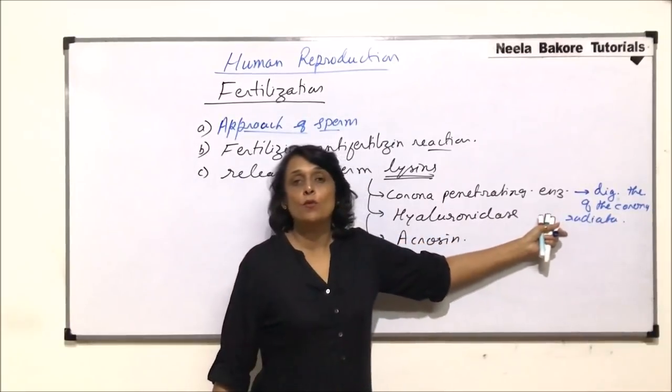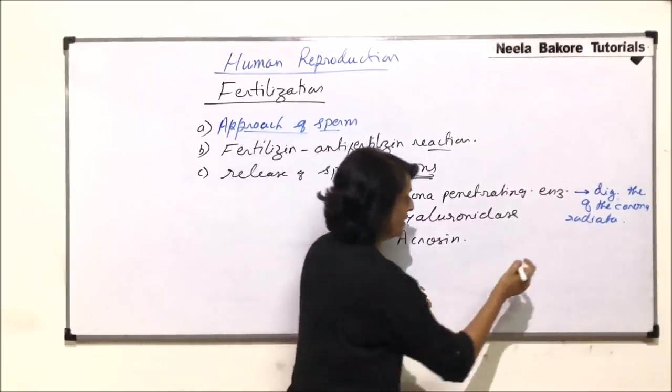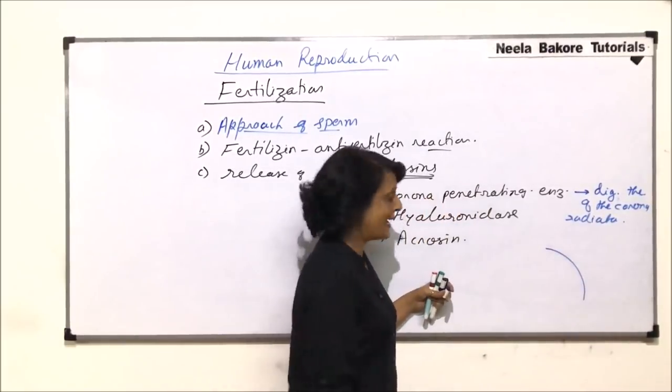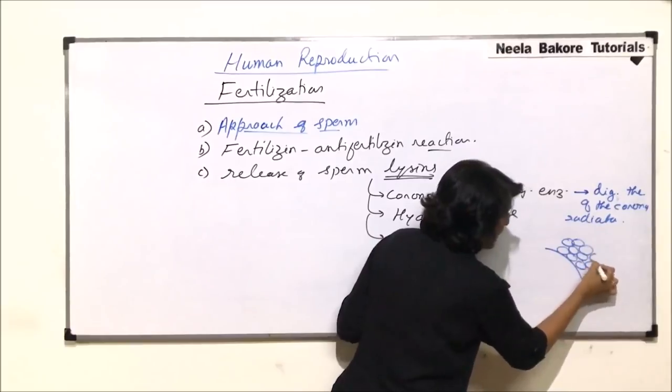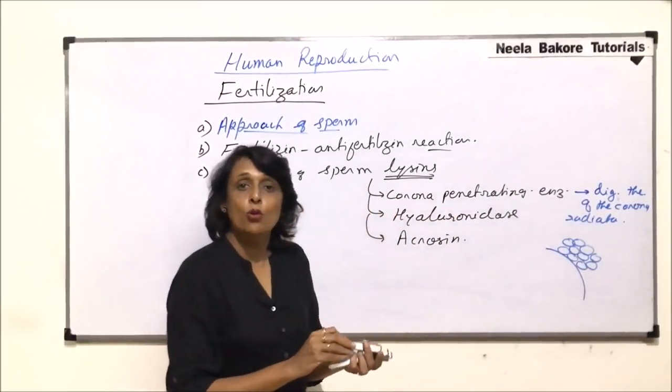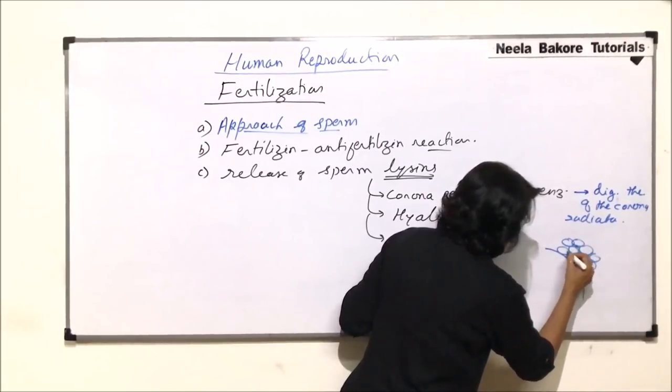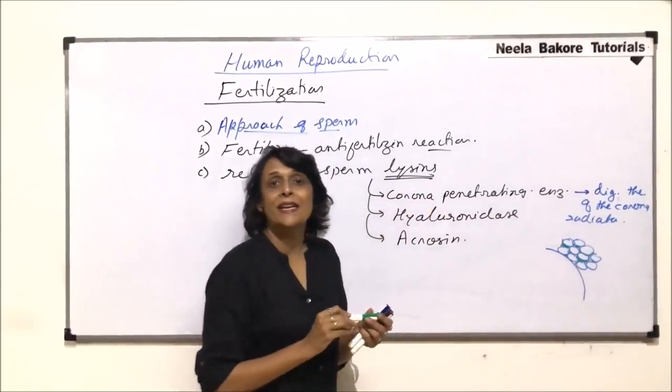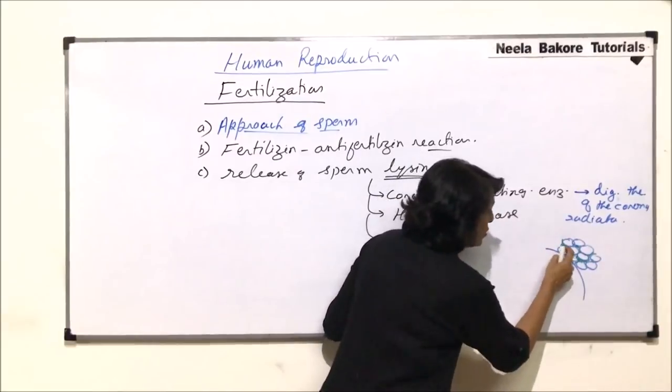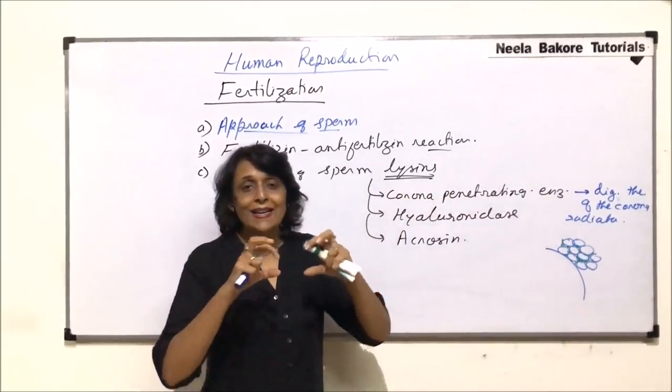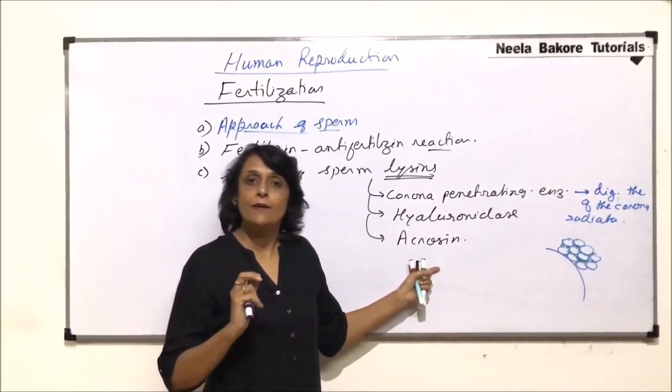The cells of corona-radiator, they are held together by a gelatinous glue-like material. Suppose, this is the membrane of the egg and here are these cells. So these cells which make this corona-radiator, they are glued together with the help of the substance. This substance is hyaluronic acid. So this hyaluronidase actually dissolves this hyaluronic acid so that the cells, they loosen up, and there is a passage for the entry of sperm.